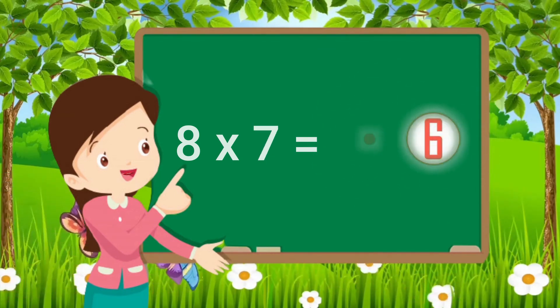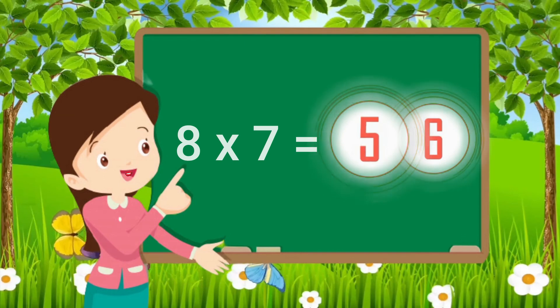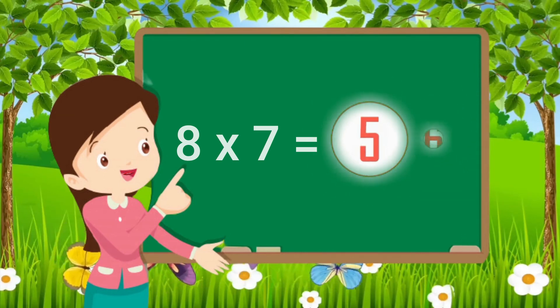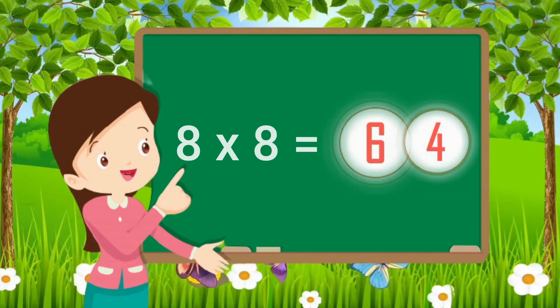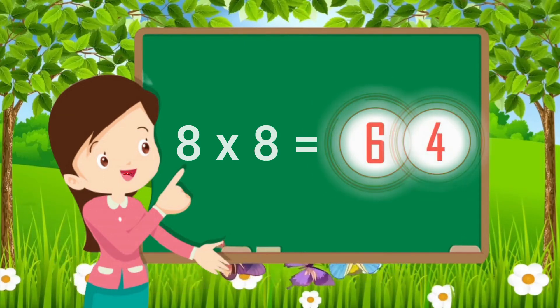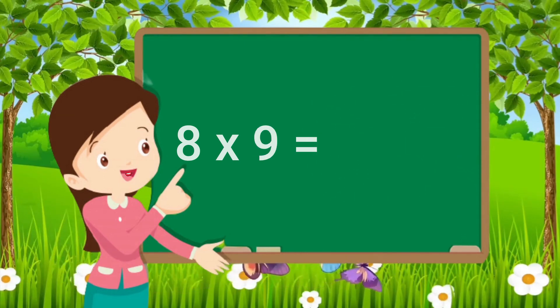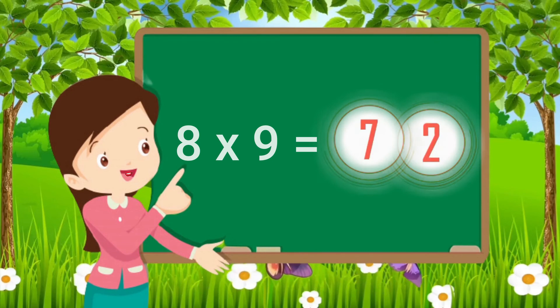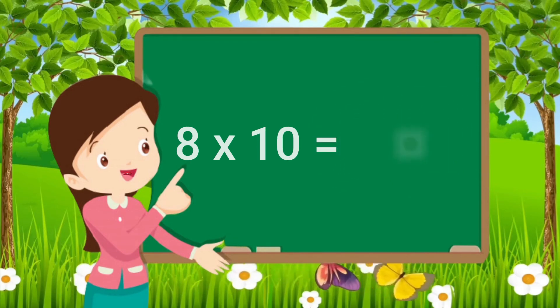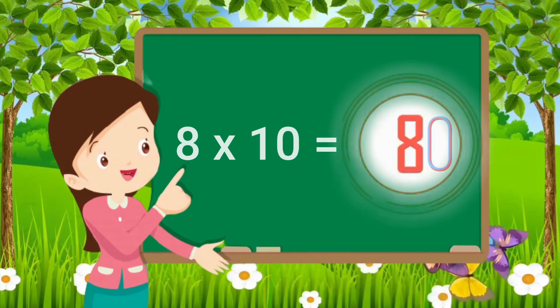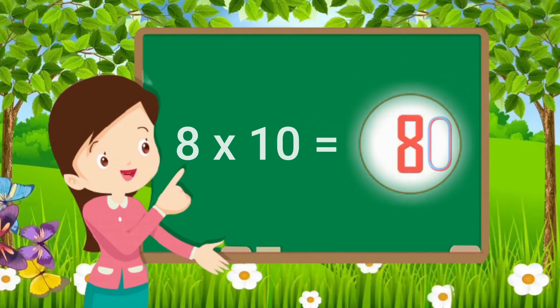Eight sevens are fifty-six. Eight eights are sixty-four. Eight nines are seventy-two. Eight tens are eighty.